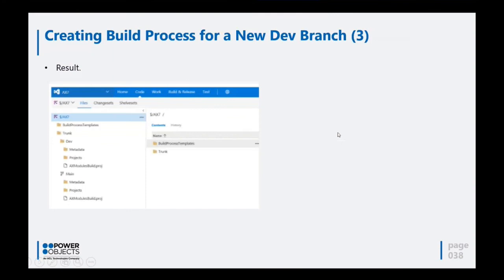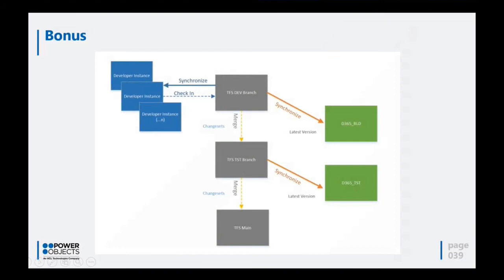Now this is where my demo is going to start. This is a concept I've been working with for a long time, and it doesn't work for everyone, but I wanted to share it since we are a community and we can all learn from each other. Basically, there are two ways of deploying code: one way is to create a deployable package each time you make a modification, or combine multiple developers into a build, create a deployable package, and import that into your test Dynamics 365 instance.